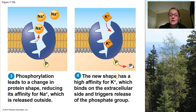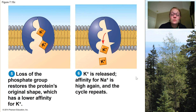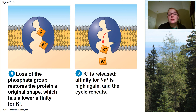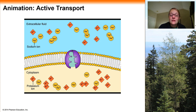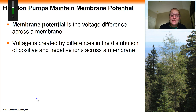At this point, the phosphate group is removed from the sodium potassium pump and it returns to its original shape facing the inside of the cell. This releases the two potassium ions into the inside of the cell, again to an area where their concentration is already high. The cycle can continue to repeat over and over again so long as there's enough ATP and ions present. Let's take a look at a video that will summarize this process of active transport using the sodium potassium pump as a great example.